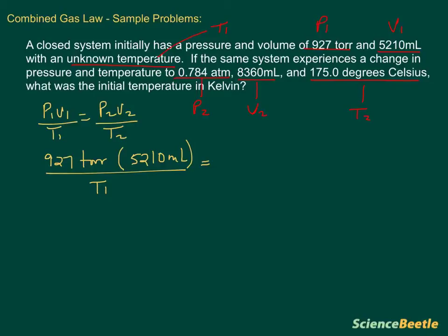This is then going to be equal to our P2, and our P2 here is going to be 0.784 atmospheres, and we're going to multiply this value times our V2, which is 8360 milliliters, and we're going to divide all of this by our T2, which in this particular case is 175.0 degrees Celsius.